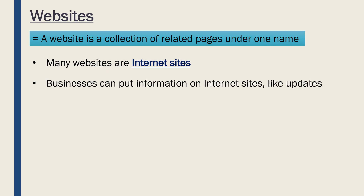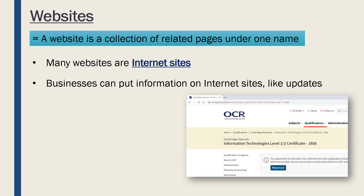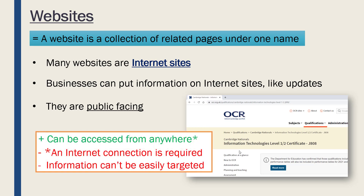So if we have a normal website on the internet, we can, if we are a business, put information on our website like updates and other information. This is the OCR website for this course — there are past papers, specifications, and so on. These websites are public-facing, meaning anyone can view them. Because they are public-facing, they can be accessed from anywhere — your physical location, whether you're in India or Argentina, doesn't matter.